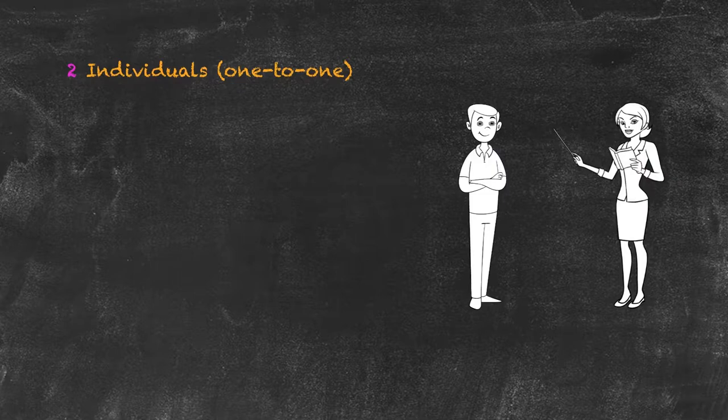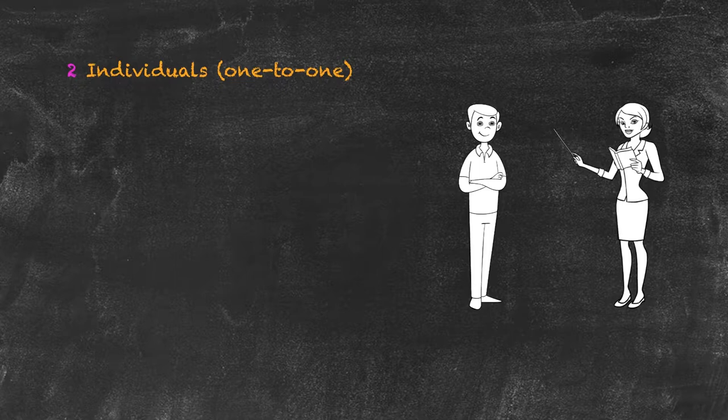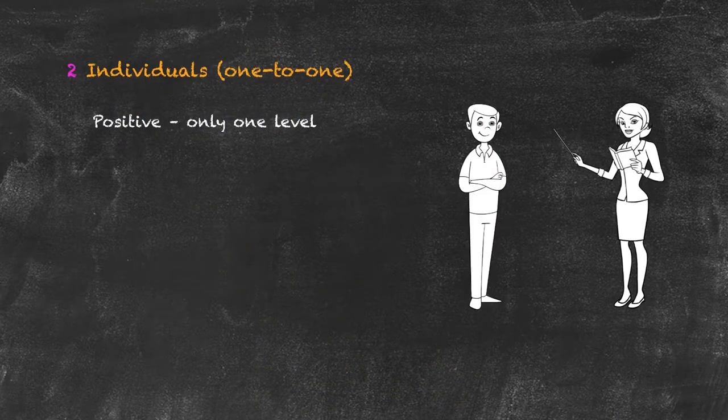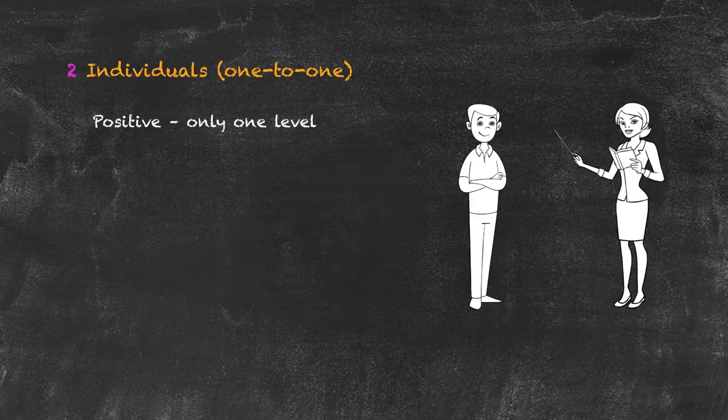Teaching one-to-one has some positives and negatives about it. Perhaps the main positive is that because you've only got that single student, you're only ever working at one level, so there's no chance of any mixed ability with one student.